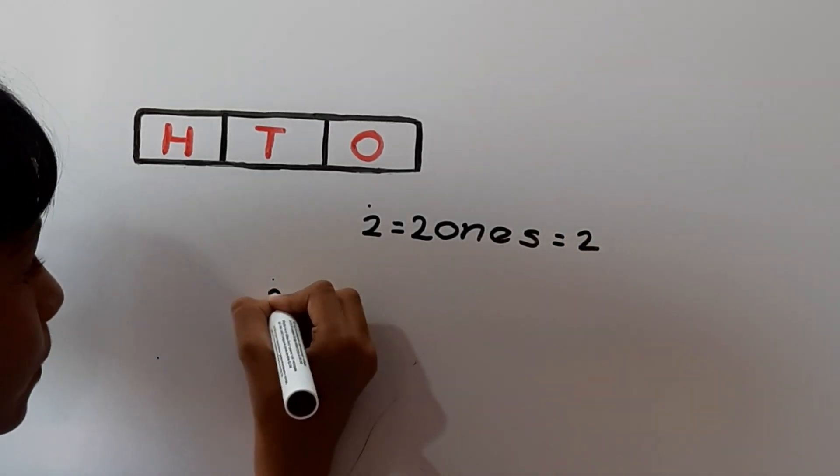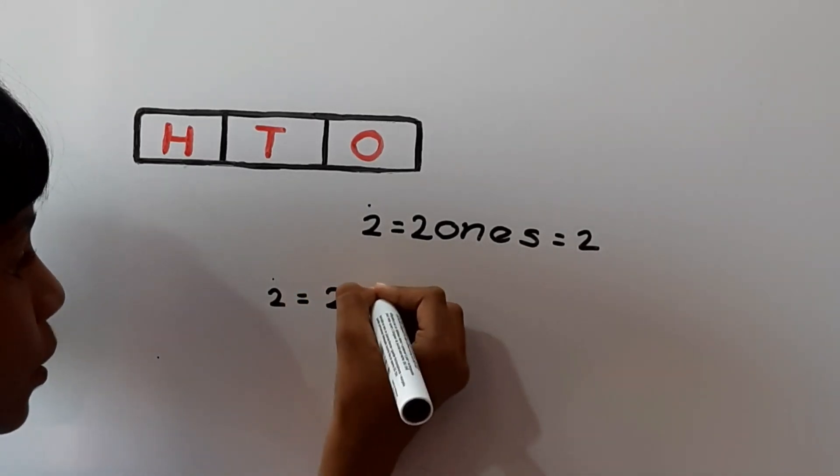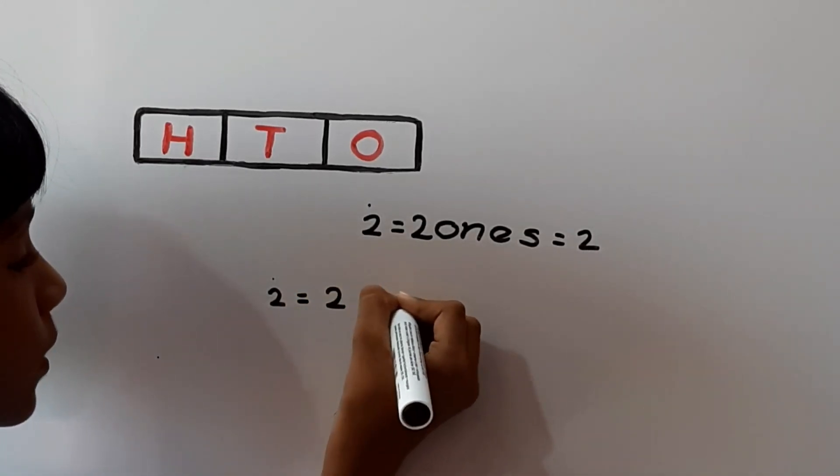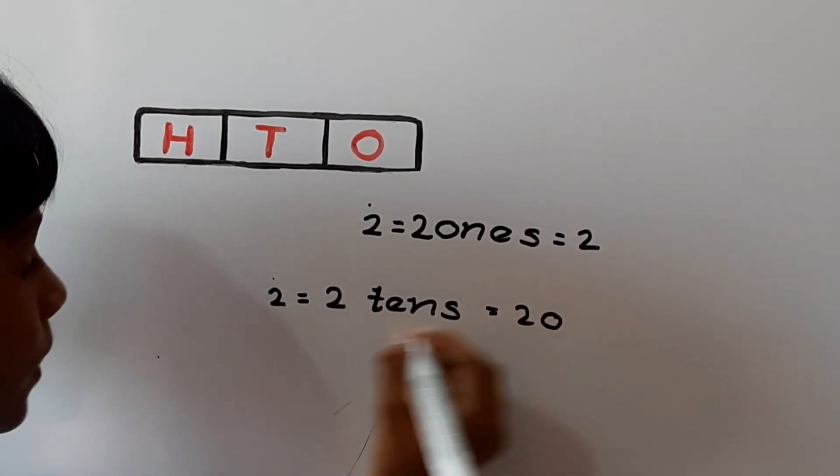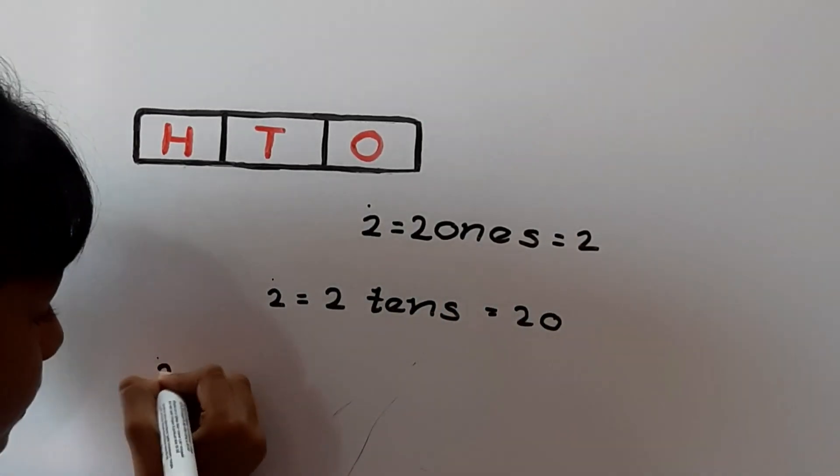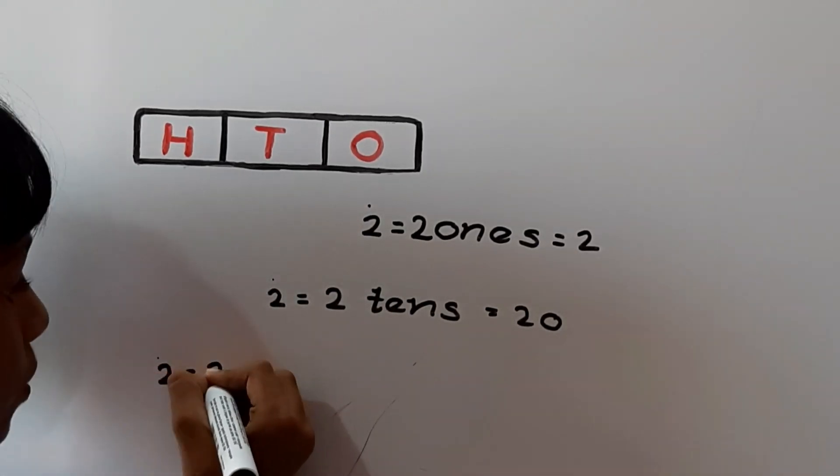If you keep 2 at 10's place, the place value is 2 tens. If you keep 2 at 100's place, the place value is 2 hundreds.